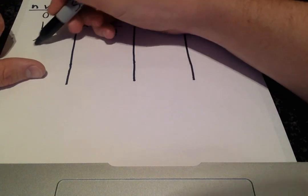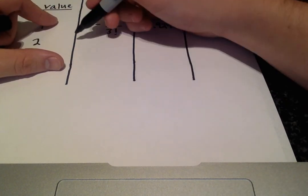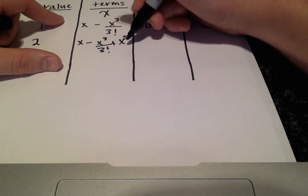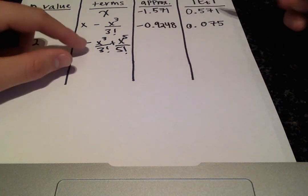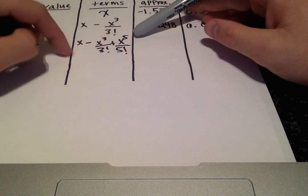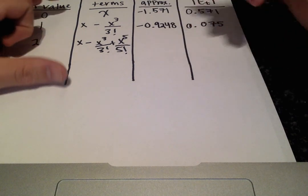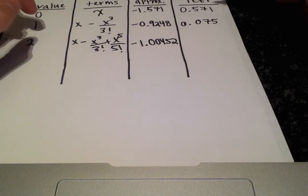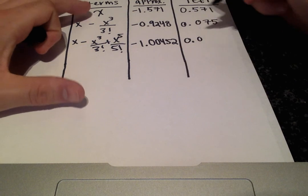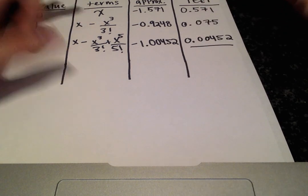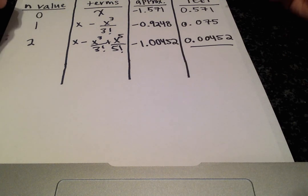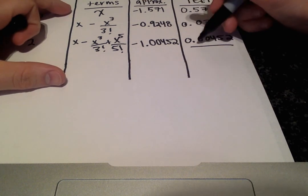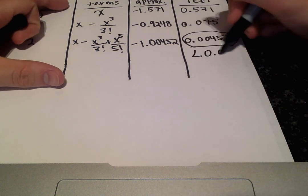With n equals 2, we add one more term to the Taylor series expansion. Plugging in negative pi over 2 gives negative 1.00452, and our absolute true error is 0.00452. Our problem statement required an absolute true error less than 0.05, and 0.00452 is indeed less than 0.05.